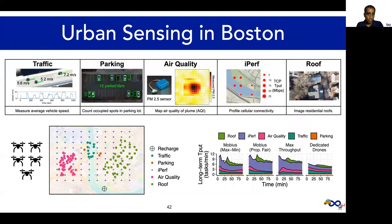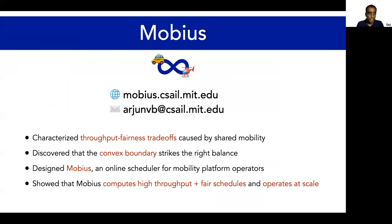We also evaluate Mobius on a real drones-as-a-service deployment in Boston, and we encourage you to check out our paper to learn more about those results. In building Mobius, we characterize the tension between throughput and fairness caused by shared mobility, and we discover that the convex boundary strikes the right balance between the two. We deployed Mobius on two real-world case studies and showed that Mobius can simultaneously provide high throughput and fairness in its vehicle schedules, and also operate at city-wide scale. Thanks for listening, and please visit our website to give Mobius a try.